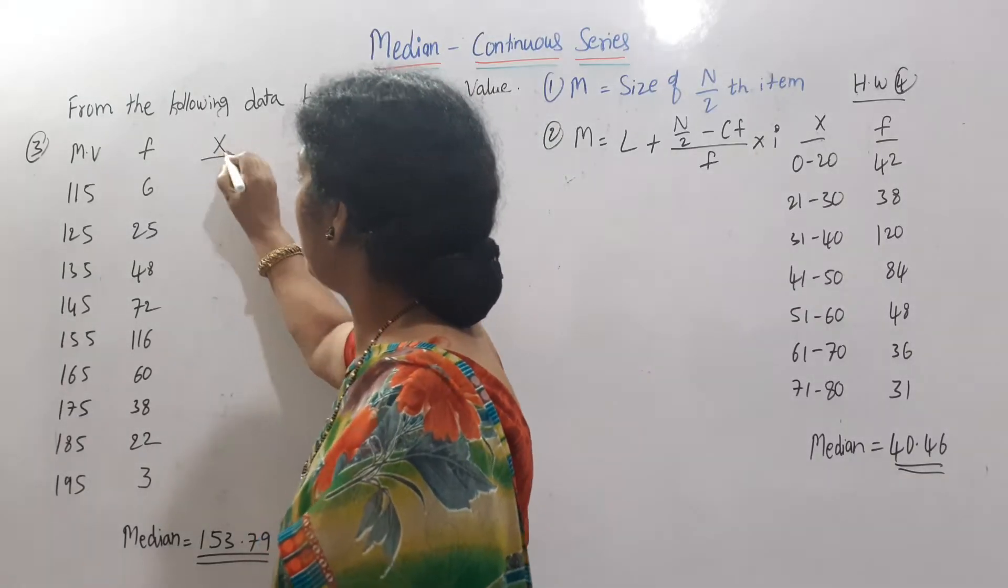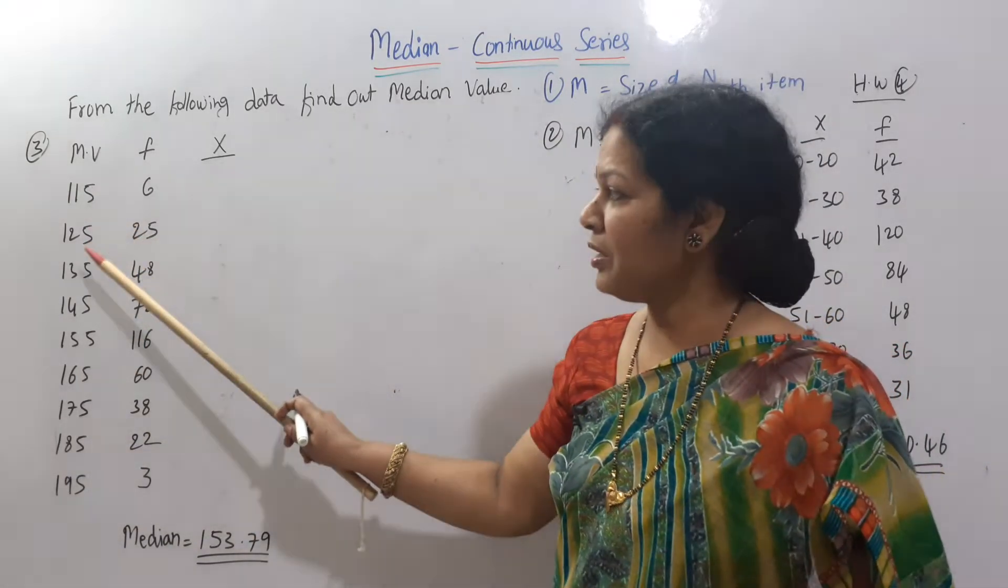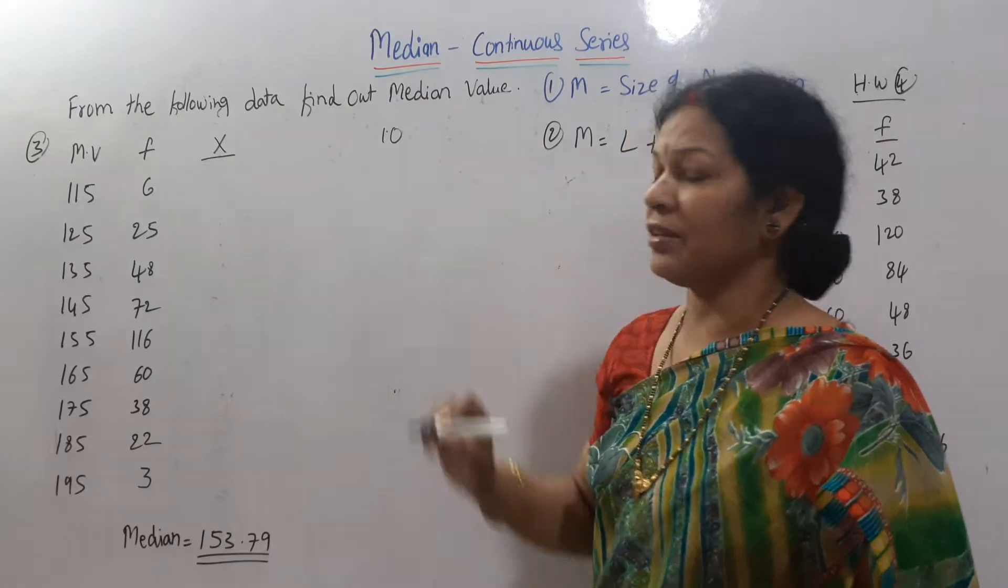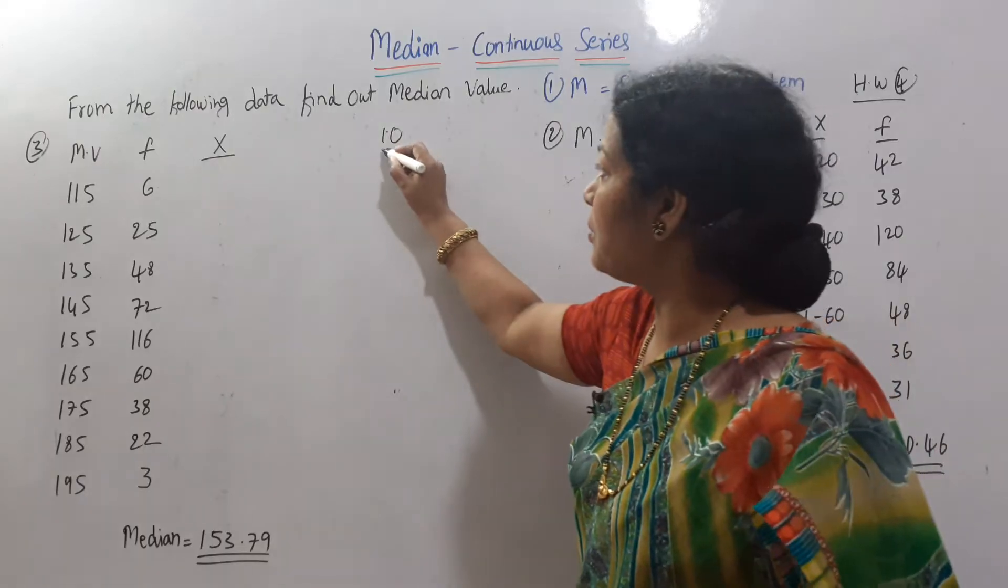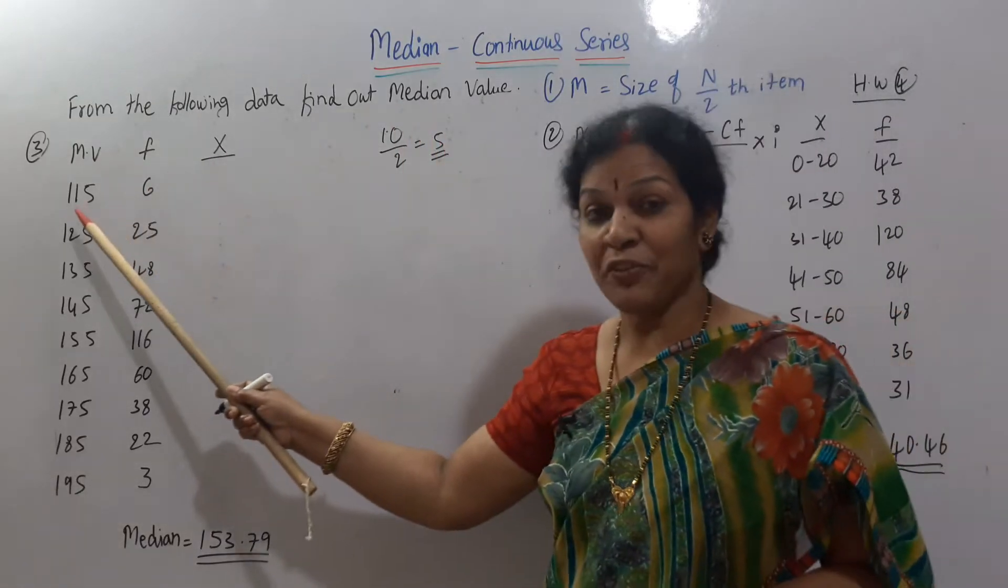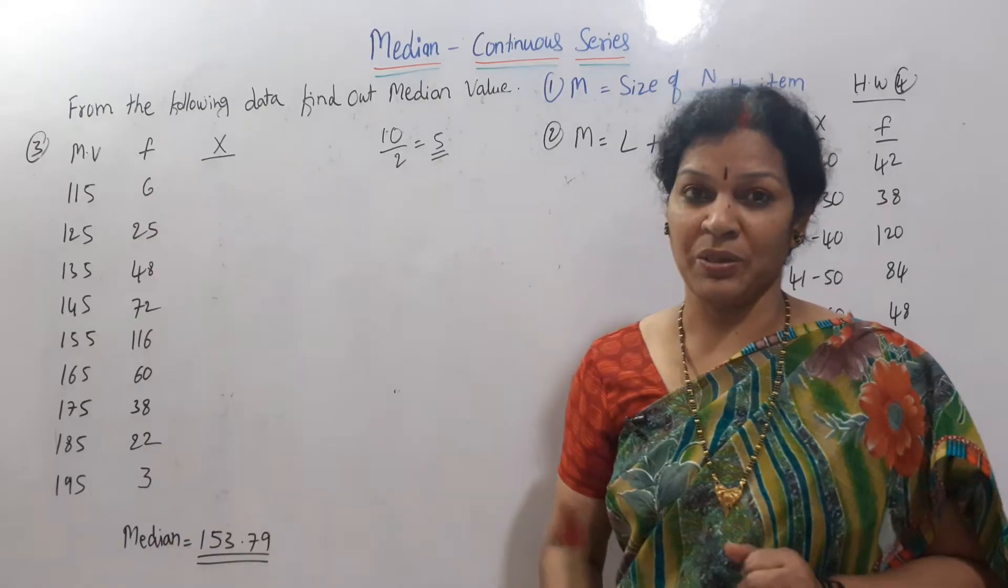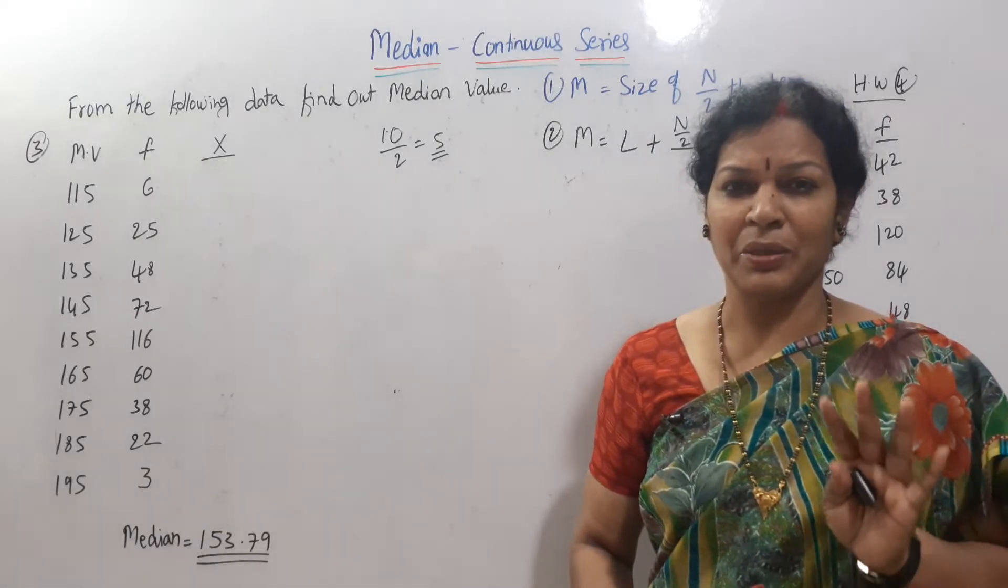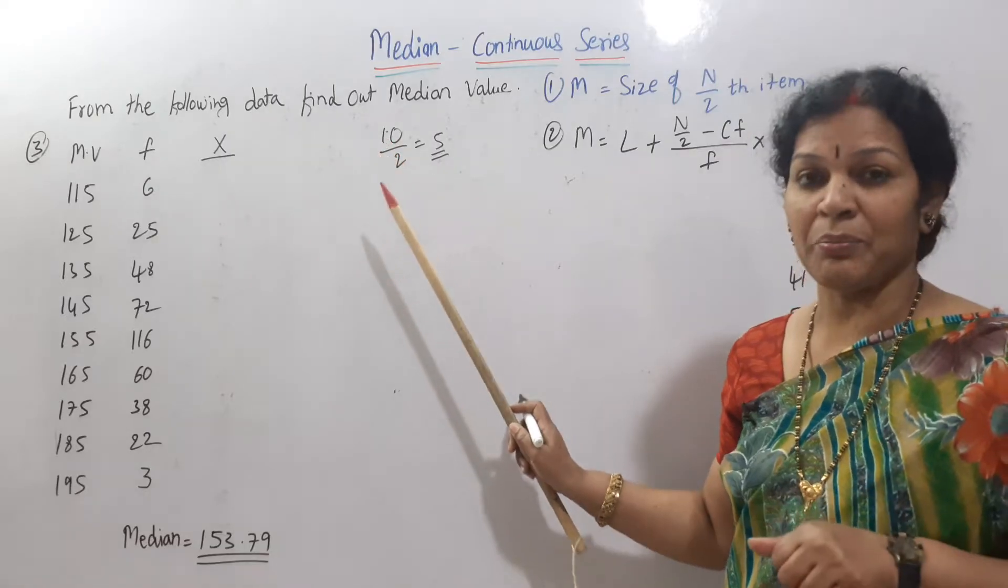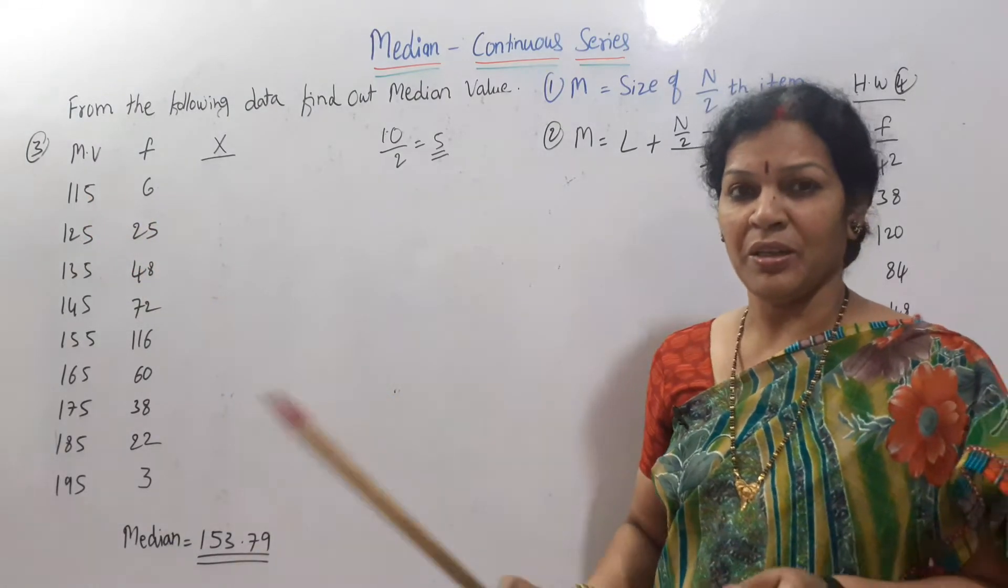So for this x value, you are going to write, suppose the difference between any number is how much? 125 minus 115 or 135 minus 125. Anywhere if you see, the difference is here 10. Make it half, means divided by 2. It comes to 5. So if you deduct 5 from 115, you will get lower class interval. If you add 5 to 115, upper class interval you are going to get. Plus or minus we have to do.